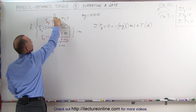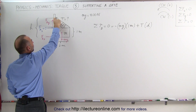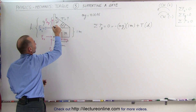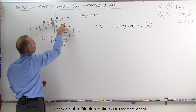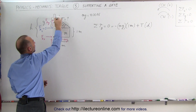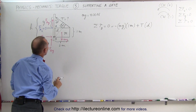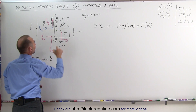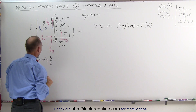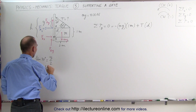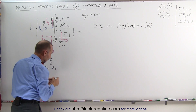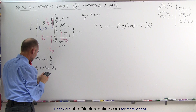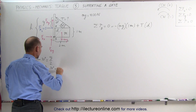H can be defined as 1 meter plus this additional distance Y. To find Y, we look at the triangle formed by the cable and the gate. Y is the opposite side and the length of the gate (2 meters) is the adjacent side. So the tangent of 30 degrees equals Y divided by 2 meters, which means Y equals 2 times tan(30°). That gives us Y = 1.15 meters.